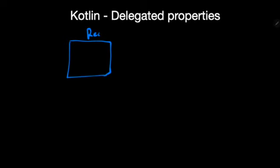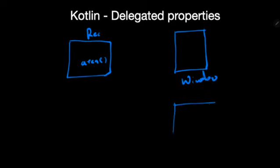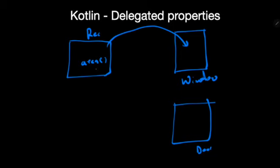To understand the delegation, let's consider I have a class — a rectangular class. In that rectangular class, I have a method to calculate the area of a rectangle. Now let's consider I have a few other classes, maybe a window class and maybe a door class. This window is also a rectangular shape and this door is also a rectangular shape, so I need to calculate the area of window and door. With the delegation property, we can delegate this rectangular class into the window class or into the door class, and we can take this area method reference into this class and calculate area for that particular class.